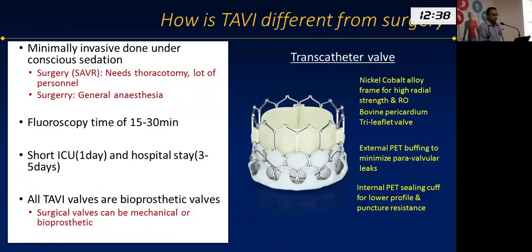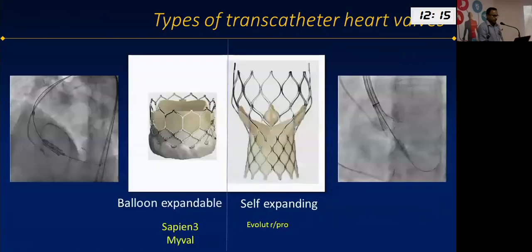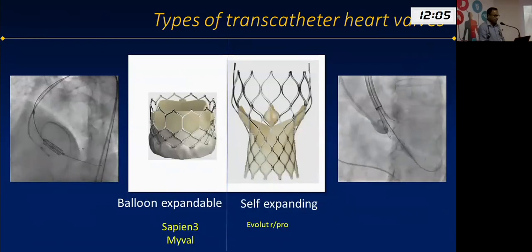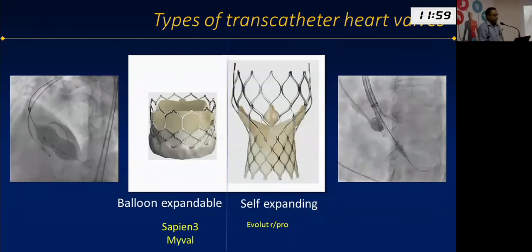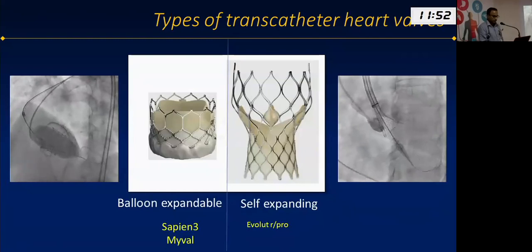All TAVI valves are bioprosthetic — tissue valves — which means they don't require long-term anticoagulation. A transcatheter valve essentially has three parts: a metallic frame, tissue valve leaflets usually made of bovine or porcine pericardium, and an external and internal sealing skirt to reduce paravalvular leaks. These valves are classified as either balloon-expandable or self-expanding. A balloon-expandable valve is crimped onto a balloon and deployed by inflation; a self-expanding valve is constrained within a catheter and deployed by retracting the catheter.